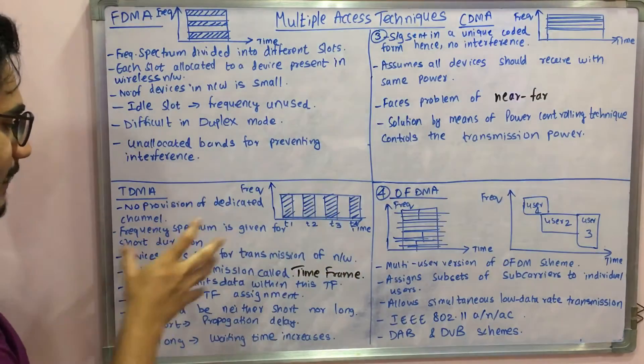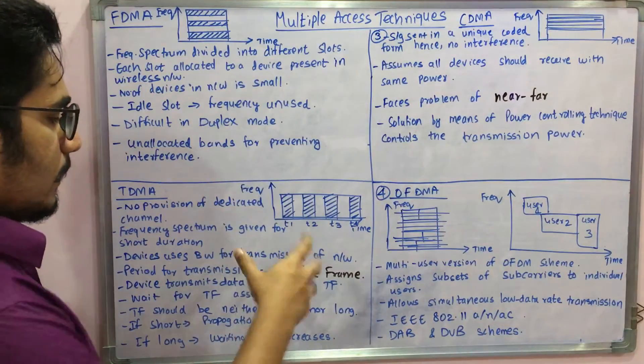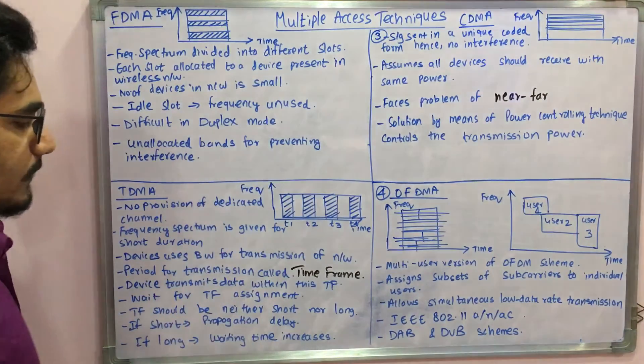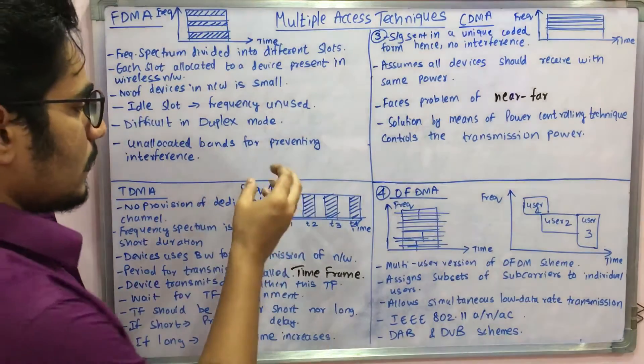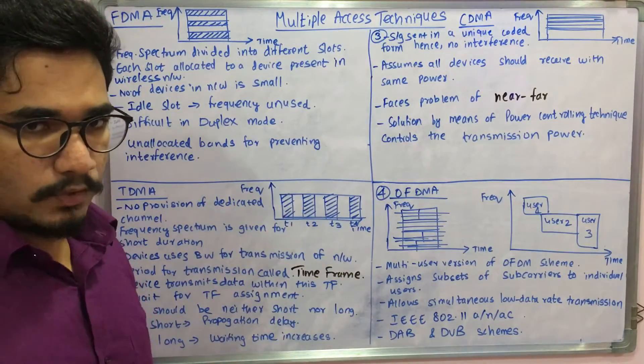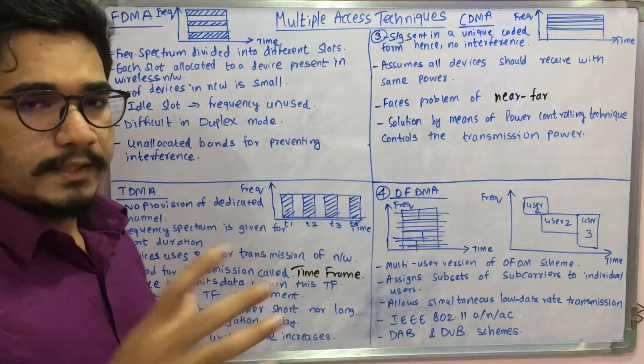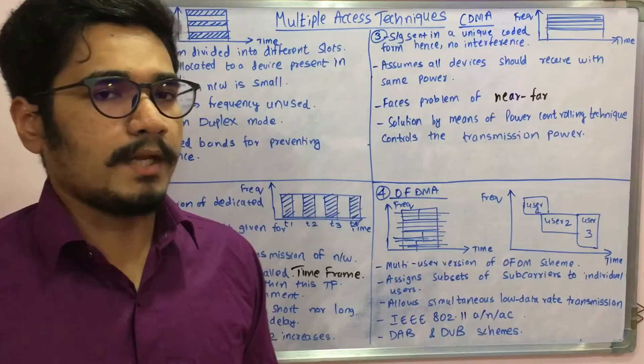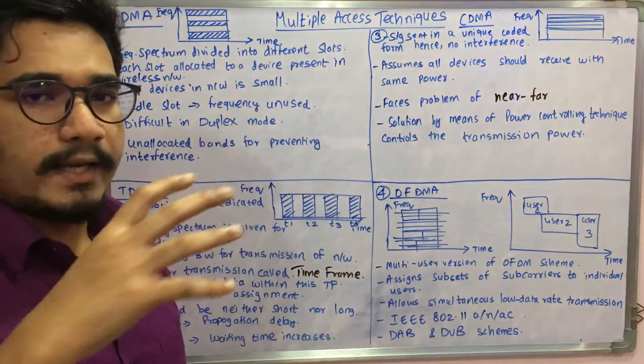The device transmits the data with this TF and there is a wait for each TF assignment. One device will transmit at one particular time, so it cannot be like that at one particular time there are multiple devices transmitting at the same time.